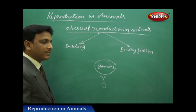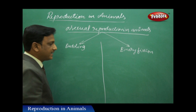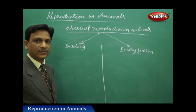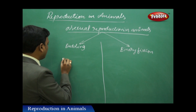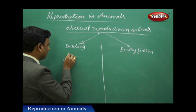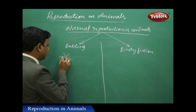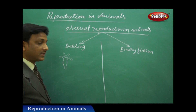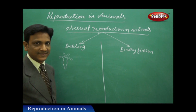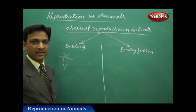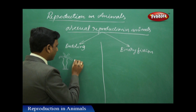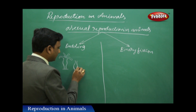Now let us see budding in animals. We observed budding in yeast, which is a kind of fungus, when we studied asexual reproduction in plants. In the same way, we find formation of buds in a microscopic aquatic animal known as hydra. We can observe the formation of buds in hydra using slides available in the laboratory, which show budding in hydra. If you observe the slide under a microscope, you will be able to find that.